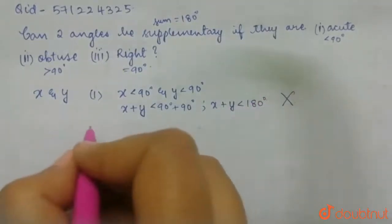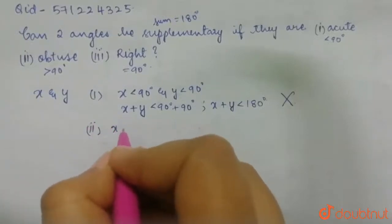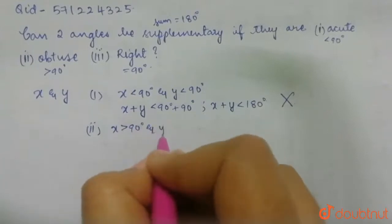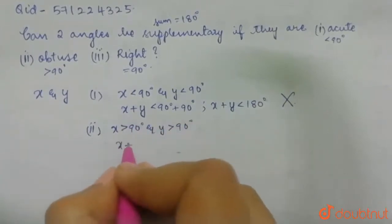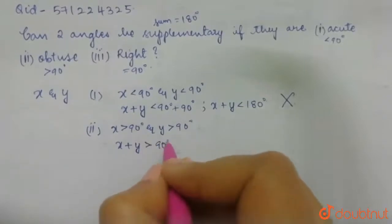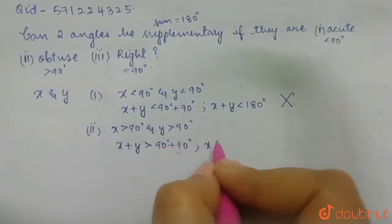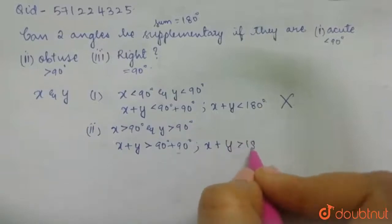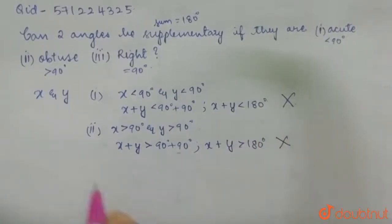Now let's go to the second case — obtuse. So x is greater than 90 degrees and y is also greater than 90 degrees. Adding them: x plus y is greater than 90 degrees plus 90 degrees, which gives x plus y greater than 180 degrees. Here also, they are not supplementary — they are greater than 180 degrees.